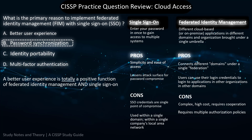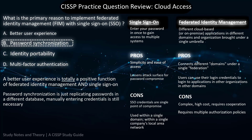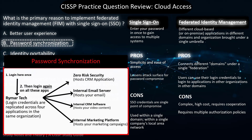Choice B is password synchronization — when your workstation login credentials are synchronized across other applications. This sounds like single sign-on, but it couldn't be further from the truth. With password synchronization, your password is replicated across applications, but you still have to manually log into each one. It just stores your password hash on their database for verification. Password synchronization is not single sign-on — it's the complete opposite — so choice B is most likely not the answer.